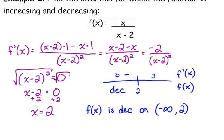When we plug in 3, 3 minus 2 is 1. 1 squared is 1. Negative 2 divided by 1 is still negative. So our function actually doesn't change.